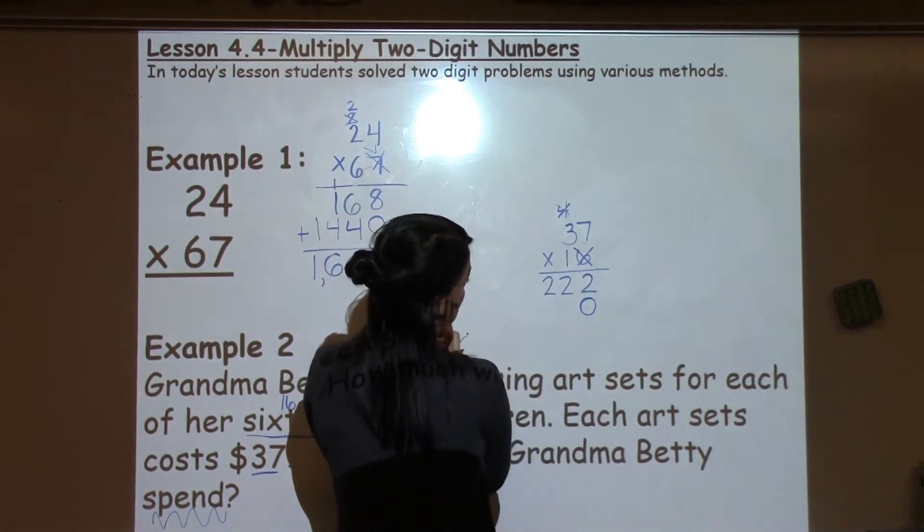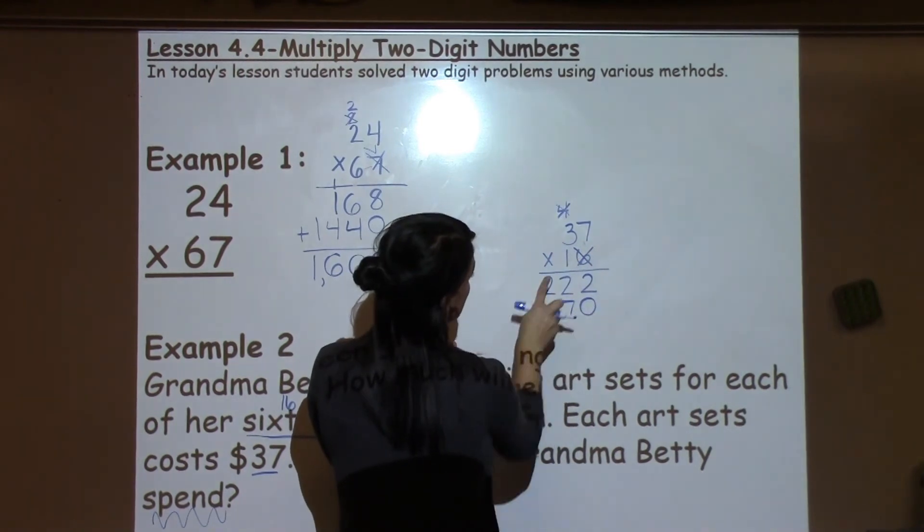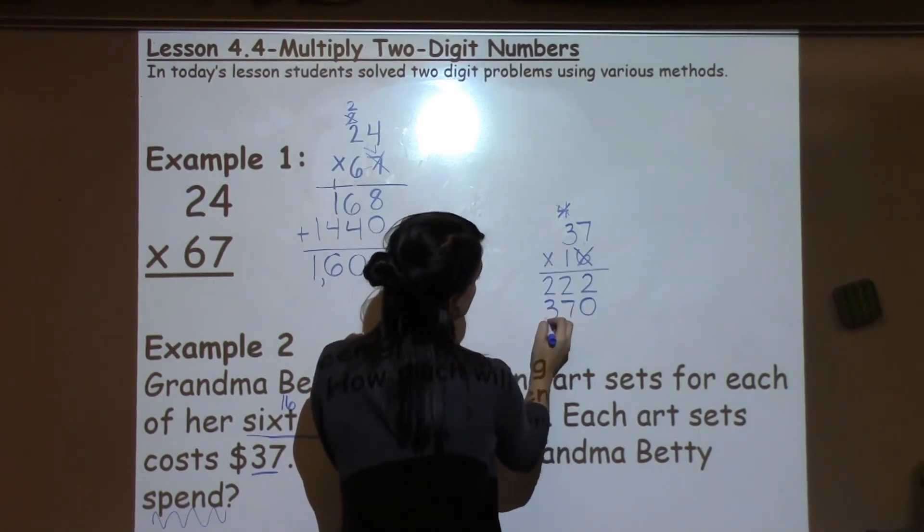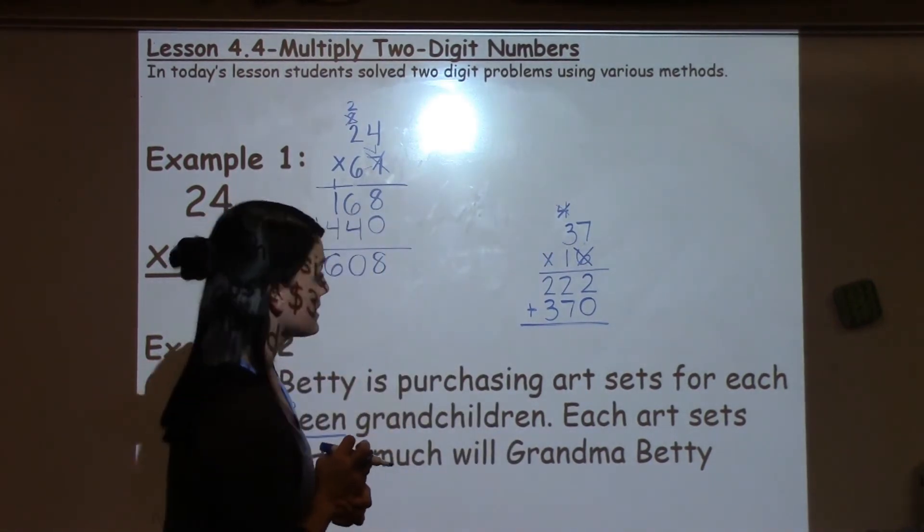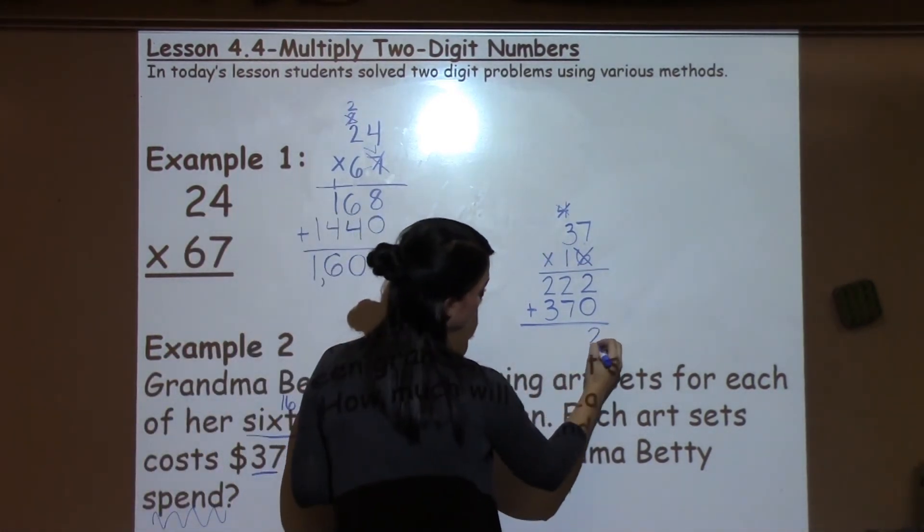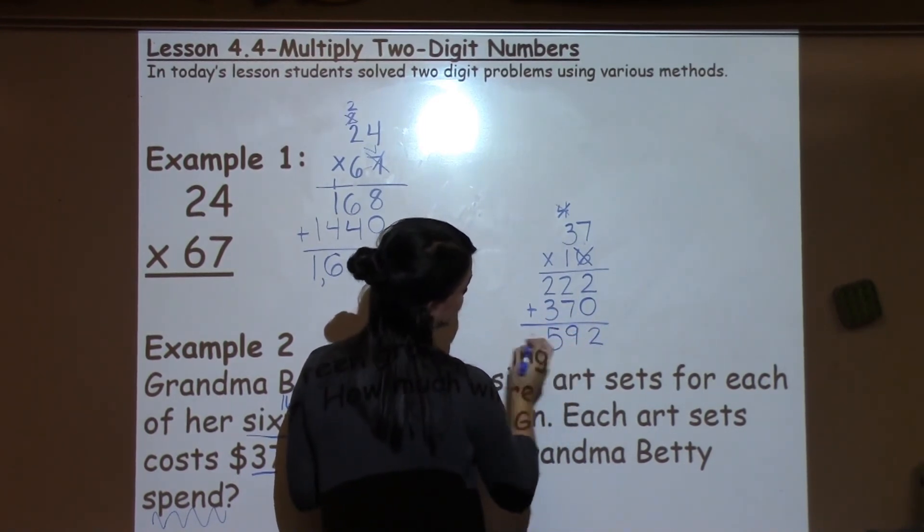Alright, so now I just work with the 1 and I'm going to distribute the 1 to everything. 1 times 7 is 7. 1 times 3 is 3. And now I can just add these numbers together. So 2 plus 0 is 2. 7 plus 2 is 9. And 2 plus 3 is 5.